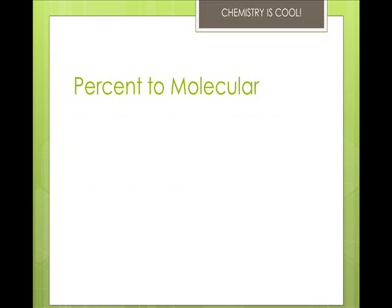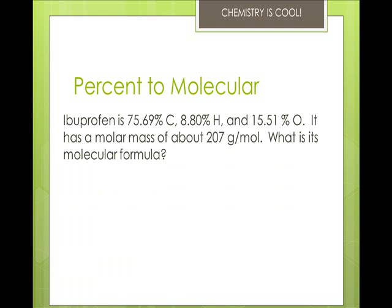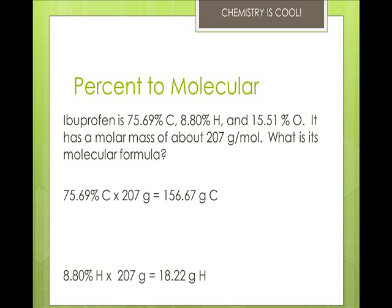Okay, let's try a different tactic, and we're going to go from percents to the molecular formula. So we have ibuprofen. It's 75.69% carbon, 8.8% hydrogen, and 15.51% oxygen. It has a molar mass of about 207 grams per mole. So I've given you the mass, we don't have to assume. So what you do is you take the percent and multiply it by the molar mass, and this is going to give you the mass in one mole of the compound.